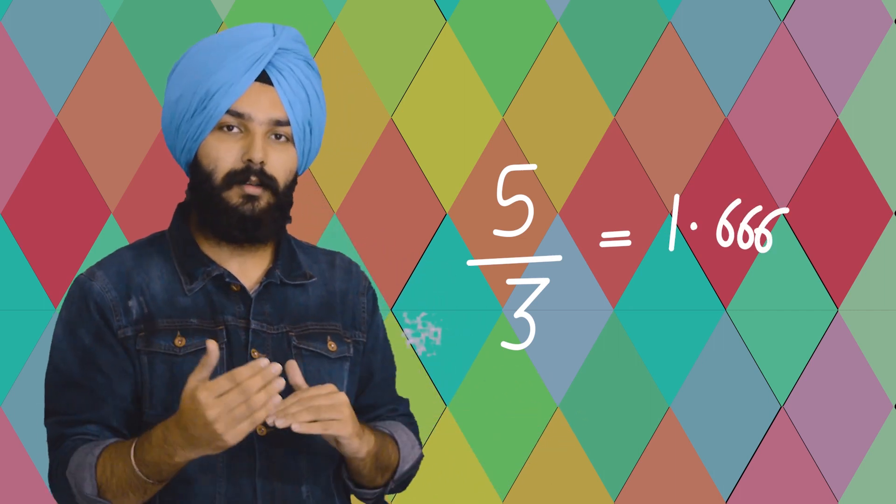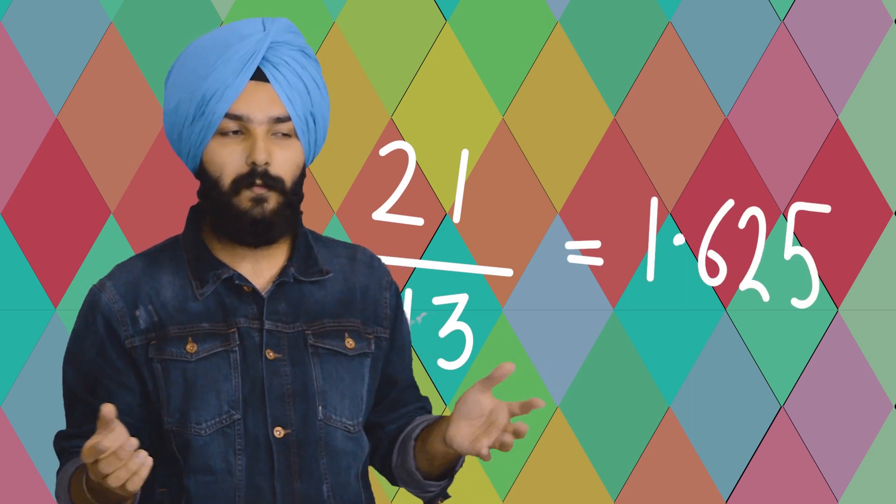How does the Fibonacci series resemble our golden spiral? If you take the ratio of the next number with the previous one, it comes out very close to the golden ratio. As the numbers go higher, the ratio gets closer and closer to 1.618. For example, 5 to 3 is 1.666, which is close. 21 to 13 is 1.625 — that's closer. And 233 to 144 gives us 1.618 — the golden ratio.